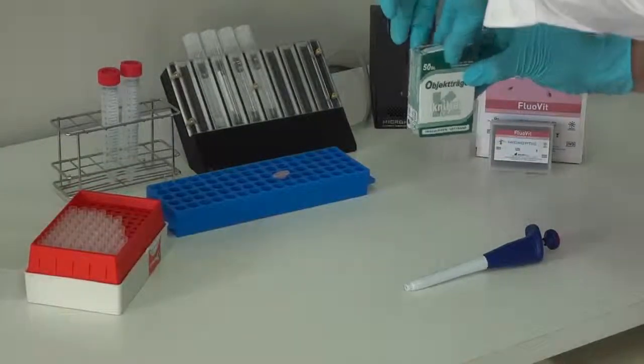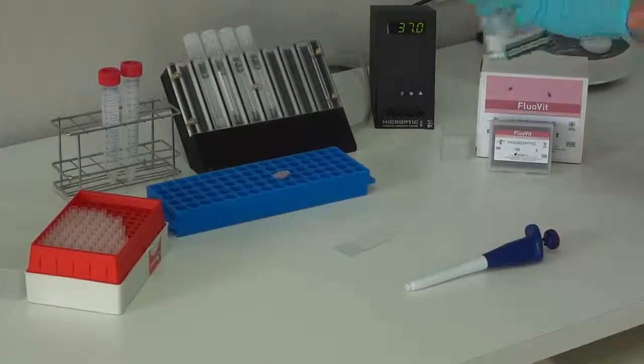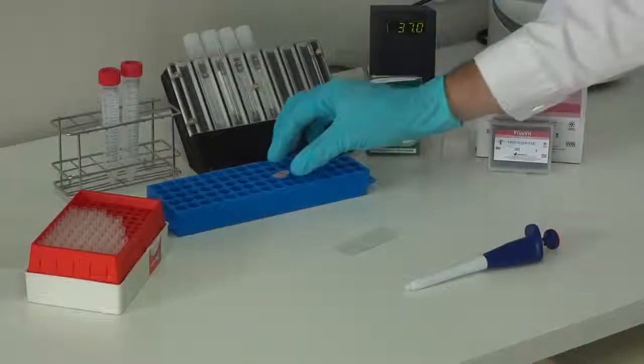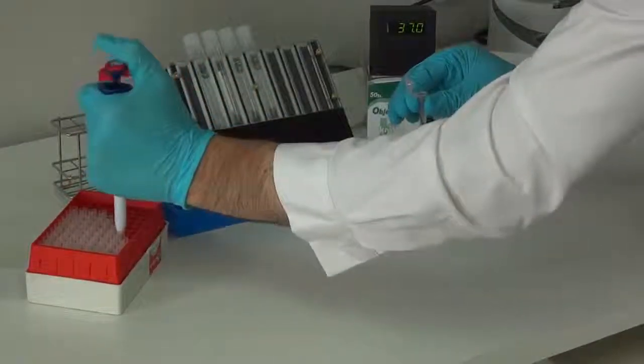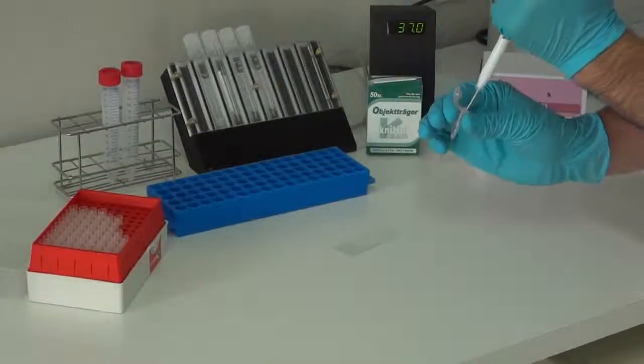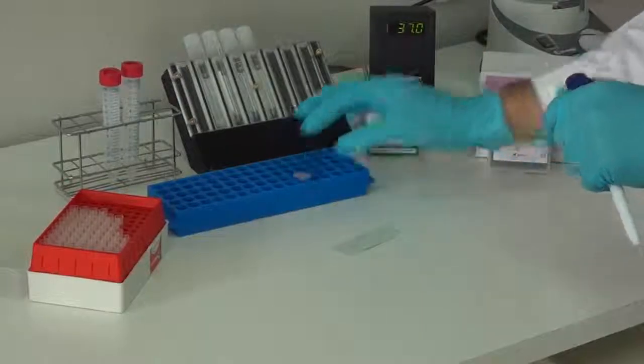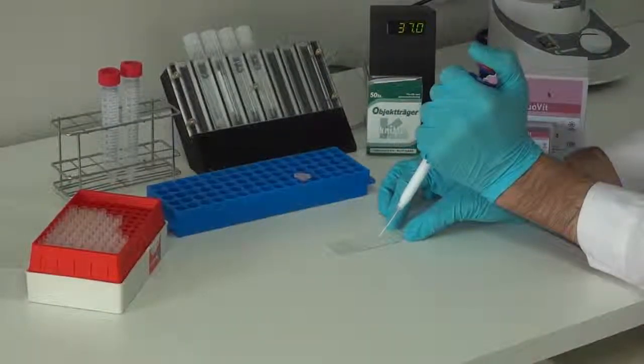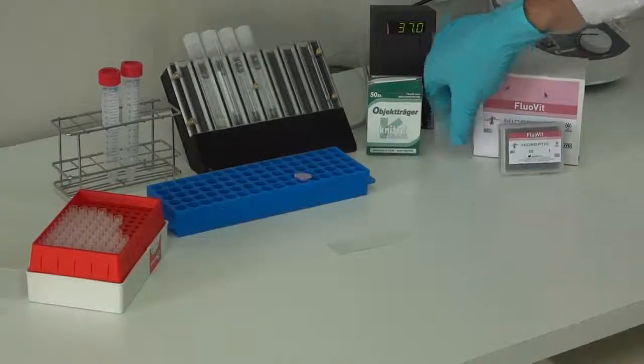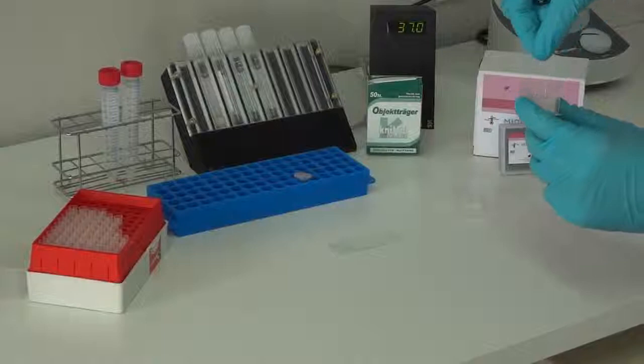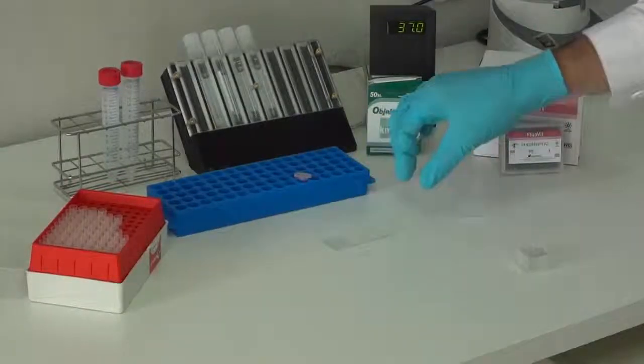Last step is to put a small aliquot of 10 microliters of stained sample on a standard slide. Cover with cover glass and the slide is ready to be analyzed under fluorescence.